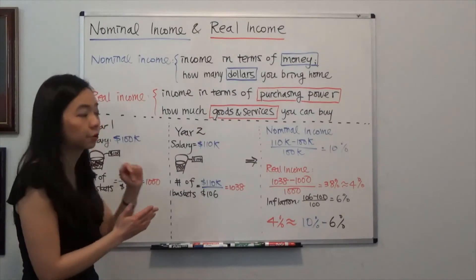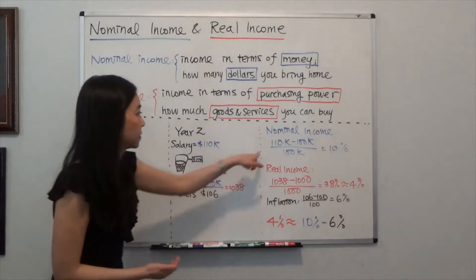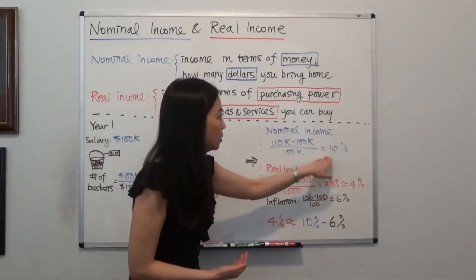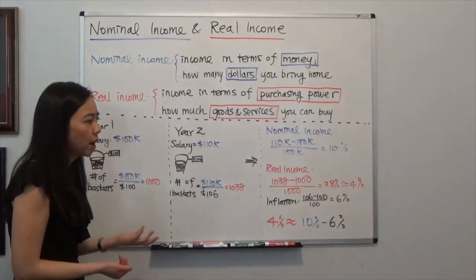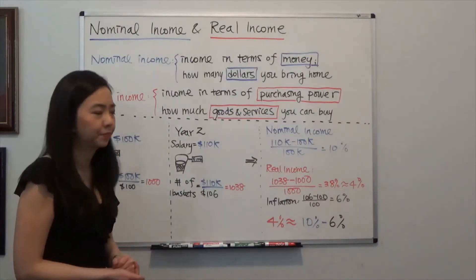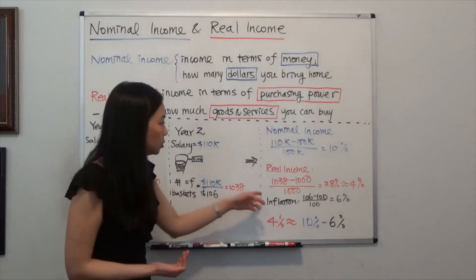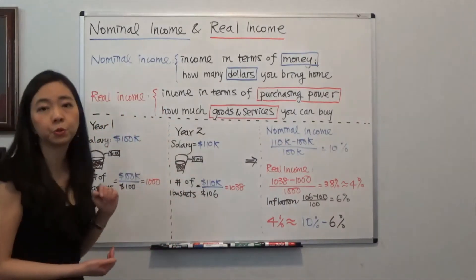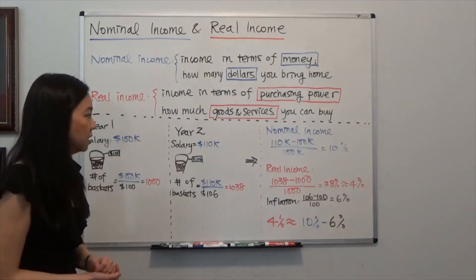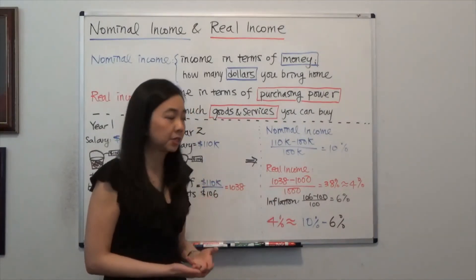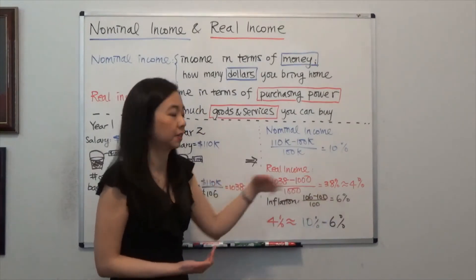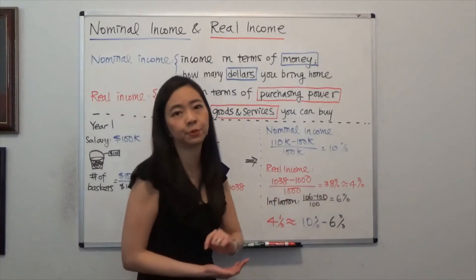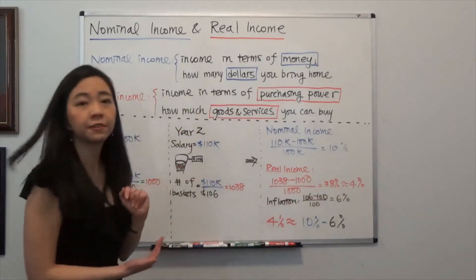So we can see that our nominal income has increased by 10%, because $110,000 minus $100,000 divided by $100,000 gives you 10%. But what about our real income? We know that in year 2 we can afford to buy 1,038 baskets, while in year 1 we could buy 1,000 baskets. So our real income has increased by 3.8%, because the number of baskets we can afford to buy has increased by 3.8%, which is close to 4%.